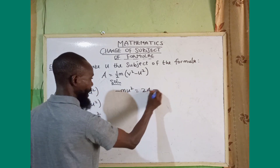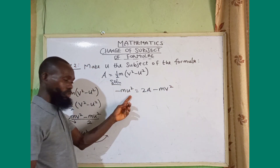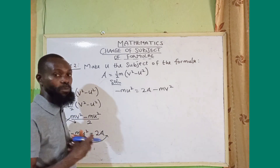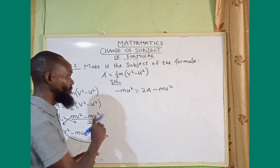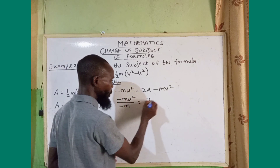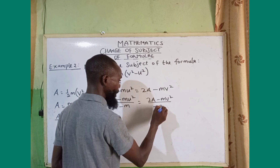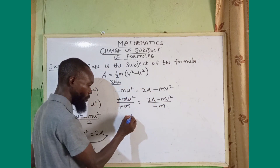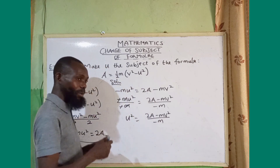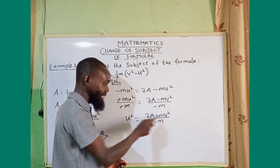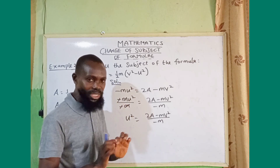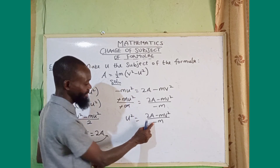I need my u, not minus m. Since m and u squared are joined by multiplication, the opposite is division. I divide both sides by minus m. Minus m cancels minus m on the left, giving u squared equals 2a minus mv squared all over minus m. Note: you cannot cancel m from the numerator and denominator because of the minus or addition sign — cancellation only works with multiplication.